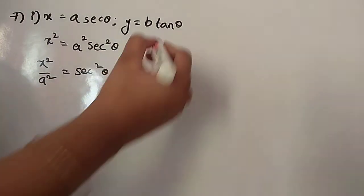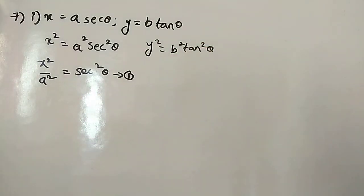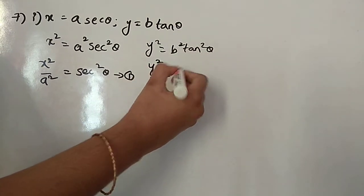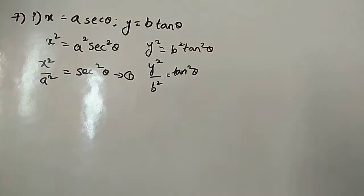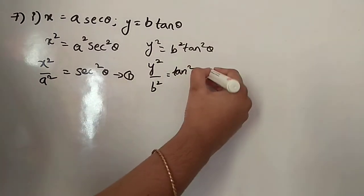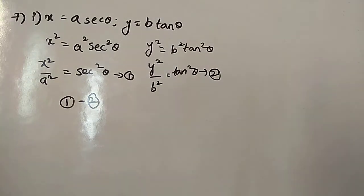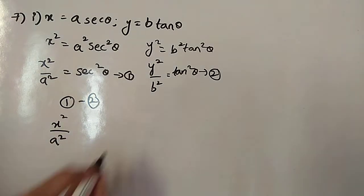Now on the other side, y² is equal to b²·tan²θ. Bringing b² to the LHS gives y²/b² = tan²θ. We will take this as the second equation. Now what we have to do is subtract equation 2 from equation 1. So equation 1 minus equation 2: x²/a² minus y²/b².